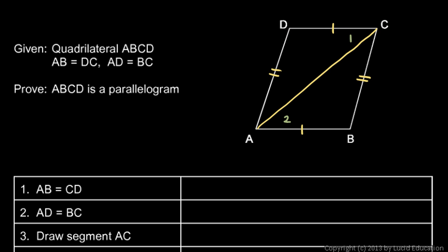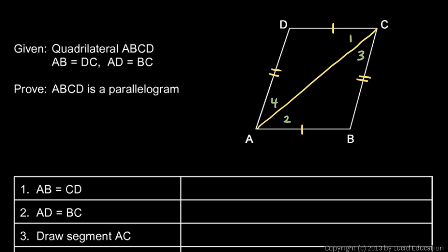Then we'll look at angles 3 and 4. I'll call this angle up here 3 and this one down here 4. Those are alternate interior angles for these two lines. Because those alternate interior angles are equal, those two lines must be parallel. Since the opposite sides are parallel, it will be a parallelogram by definition.